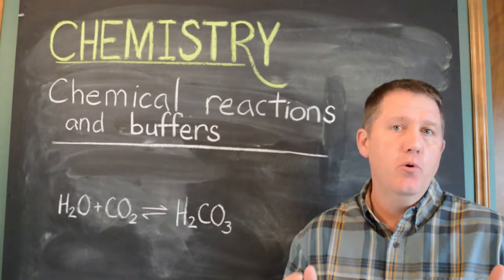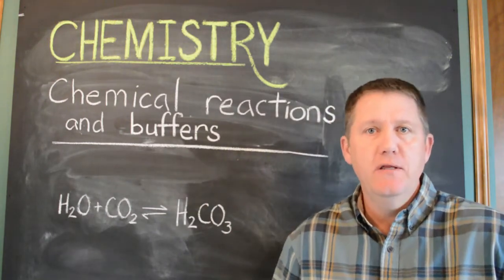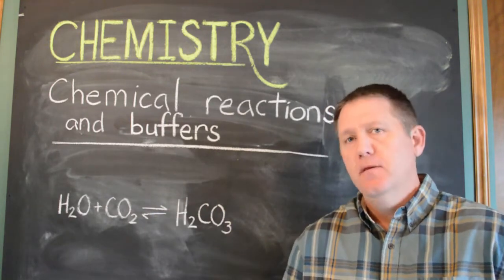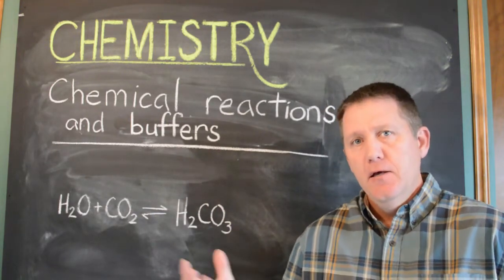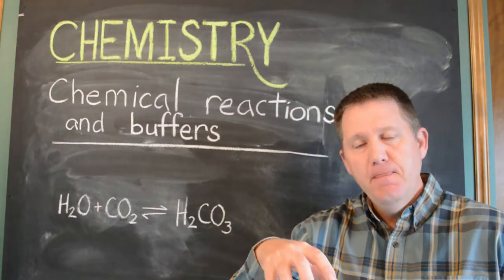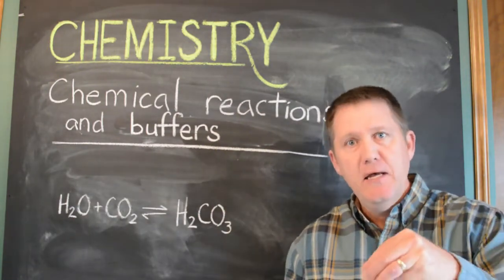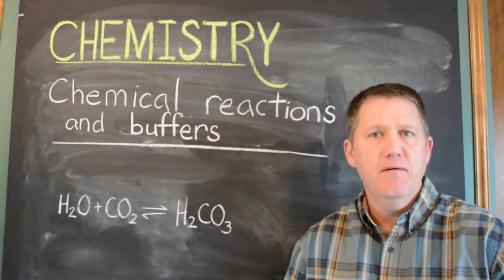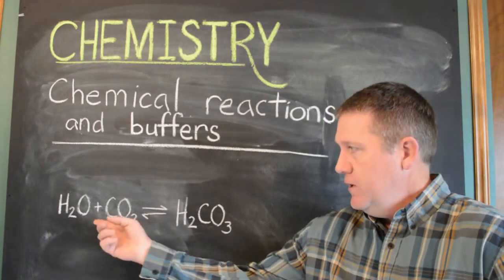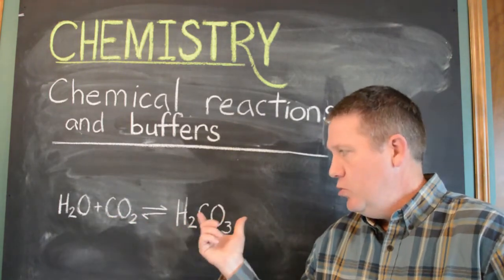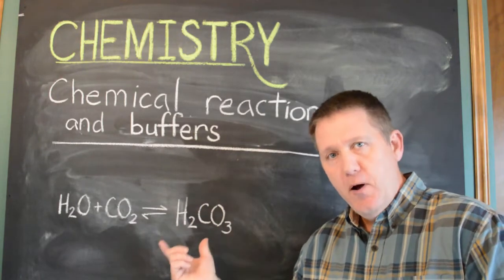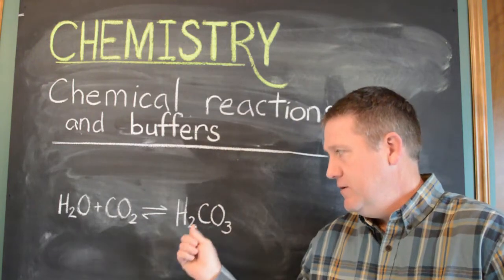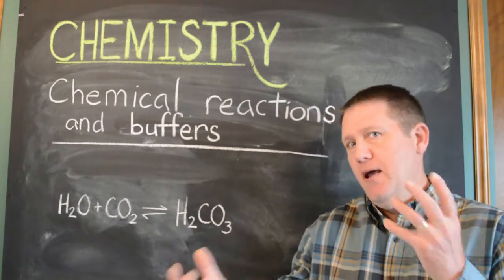Chemical reactions are important for a whole variety of functions within the body. One of those is to stabilize pH. This is a buffer system. And if more acid is added, then it absorbs the acid. If a base is added, it absorbs the base, keeping the pH stable. That's the idea of a chemical buffering system. Well, so far in this chemical reaction, we've only created an acid, carbonic acid. But a chemical buffer consists of a weak acid like this one and a weak base. We have to have both.